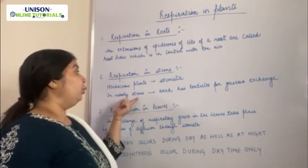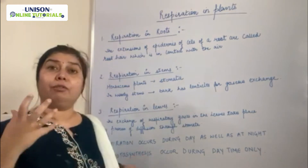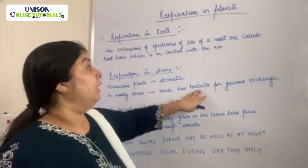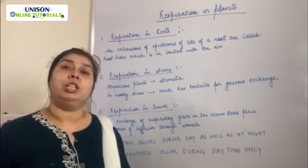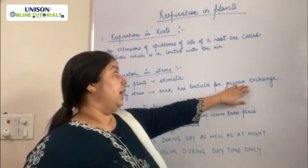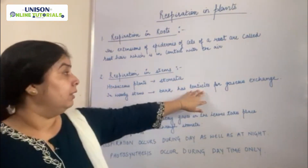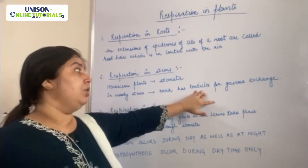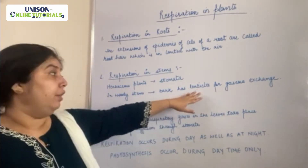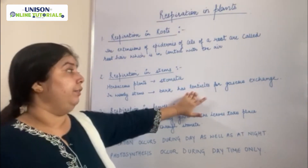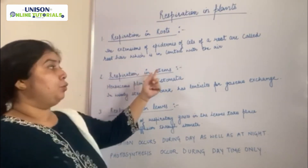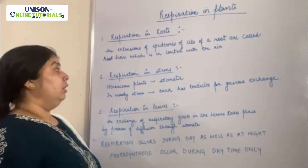Some other plants have woody stems with strong woody barks. Woody stems have lenticels. Lenticels are portions of the stem with a group of loosely packed cells through which gaseous exchange takes place. Through these lenticels, oxygen diffuses in and carbon dioxide diffuses out. So in respiration in stems, we have stomata in herbaceous plants and lenticels in woody plants.